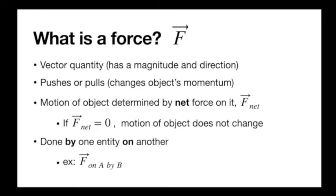So now let's talk about the physics we're going to use: forces. What is a force? It's a vector quantity — a push or a pull. You probably have a pretty intuitive understanding: forces cause stuff to move, or more specifically, they change an object's momentum, which changes its motion. The motion of an object is determined by the net force on it. It's key that it's the net force — not just any force. I'm standing here with no motion, but gravity is pulling me down and the ground is pushing me up. The net force is zero, so my motion is not changing.